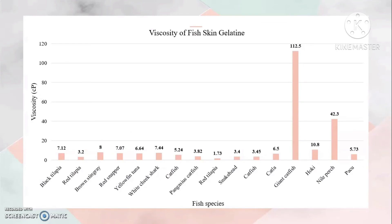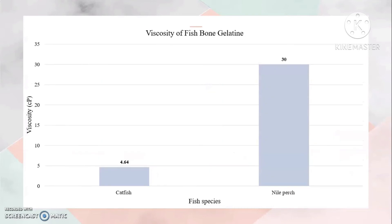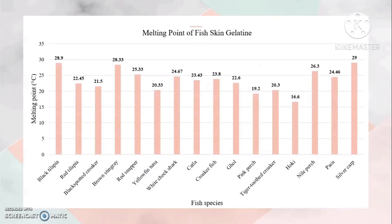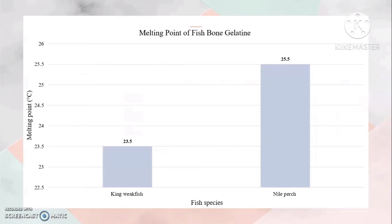The highest viscosity of fish bone gelatin was from Nile perch at 112.5 CP, while the lowest viscosity of fish skin gelatin was from Tilapia at 30 CP. Melting points of fish bone gelatin extracted from fish bones ranged from 23.5 to 25.5 degrees Celsius.